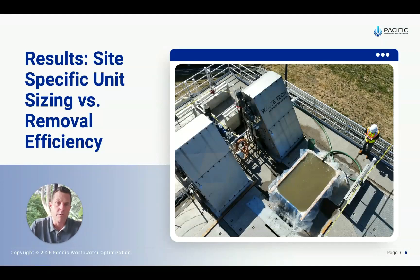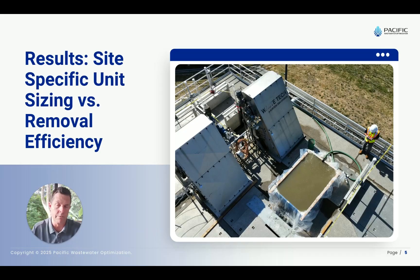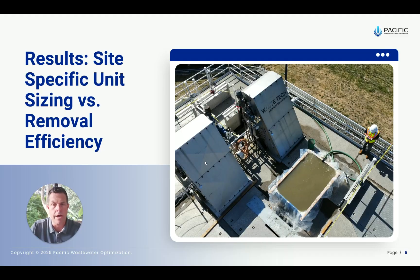The punchline of the reports is the site-specific sizing versus removal efficiency. This gives the designer the ability to say: for a specific site, I want to have this removal efficiency — whether it's 95, 90, or in peak flow conditions, 80% removal — and here is the overflow rate that I'm going to need to design my grit removal for. That's probably the most helpful thing we can do through these studies.